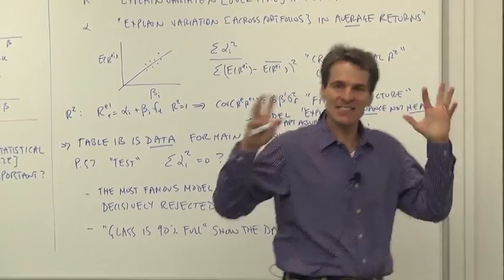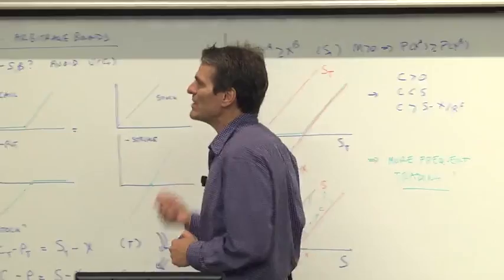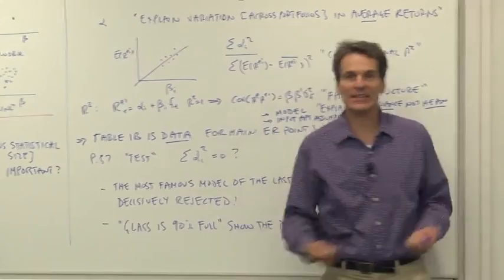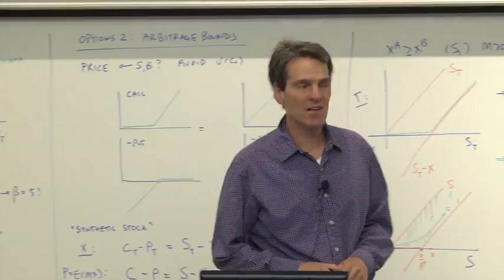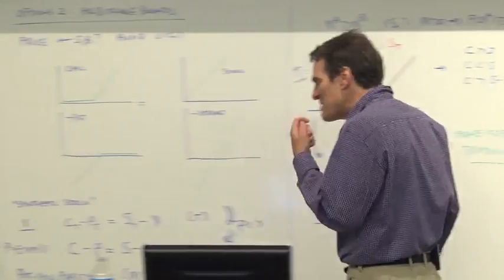Now, you might ask yourself, wait a minute, if this is data, let's test the model. Where is the test of the Fama and French model? Well, it's right here. Let's go back and read what Fama and French say about the test of the model. The way you test a model of average returns is you ask, are all the alphas jointly zero? And there's a standard statistical test of that question. It's called the Gibbons-Ross and Shanken test. And Fama and French tell us, I'm reading from page 57, the F-test rejects the hypothesis that the average returns are explained by the model at the .004 level.